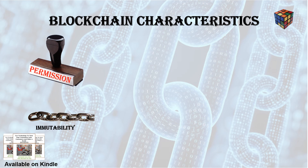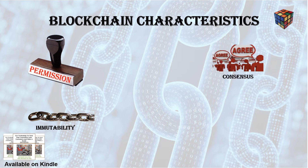Immutability. No participant can tamper with a transaction after it's been recorded to the ledger. If a transaction is an error, a new transaction must be used to reverse the error, and both transactions are then visible. Consensus. For a transaction to be valid, all participants, called miners, must agree on its validity.